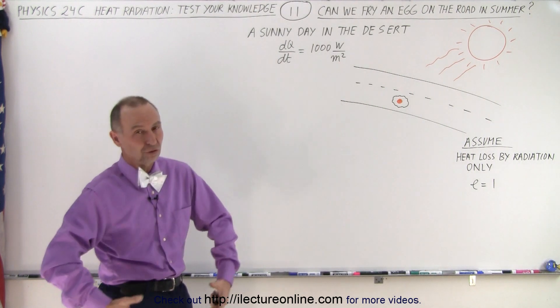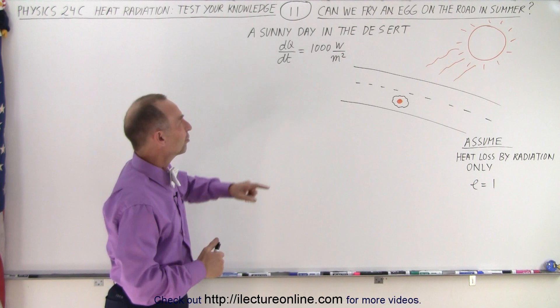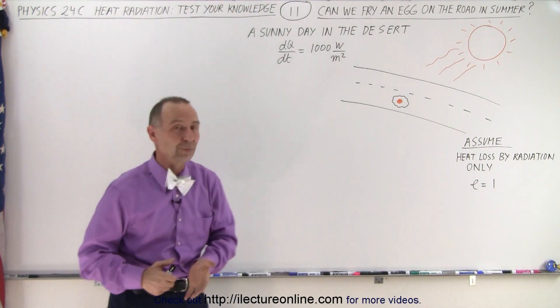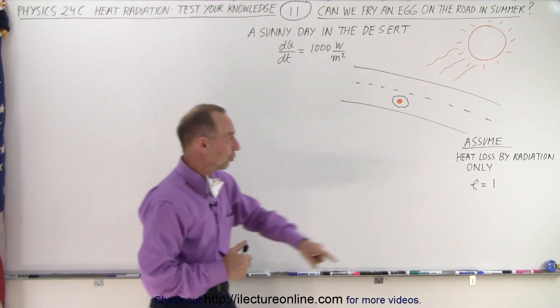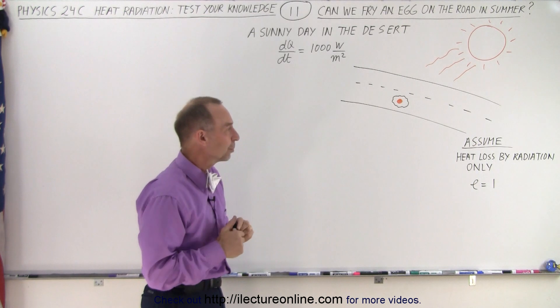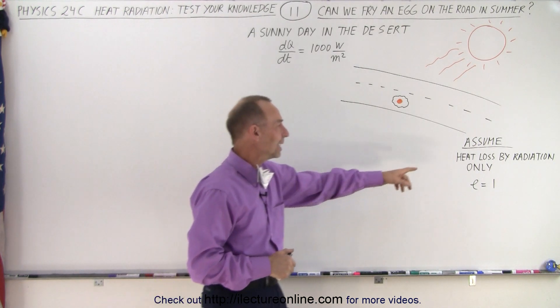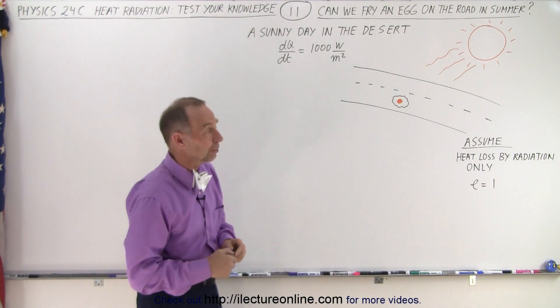If it's over the ocean, some of it is lost through evaporation, but in the desert it is possible that the road could receive as much as 1,000 watts per square meter. Let's assume that's the case here. Let's also assume that the emissivity is equal to 1, so it's a very dark blacktop road, and let's say that the heat loss is only through radiation and not through any other means.